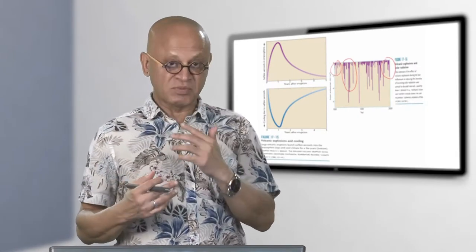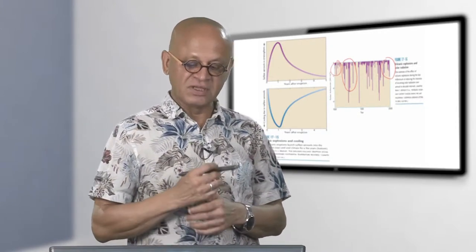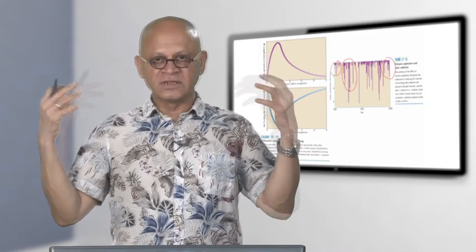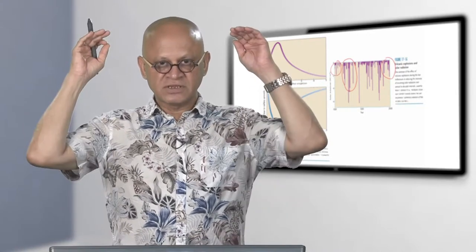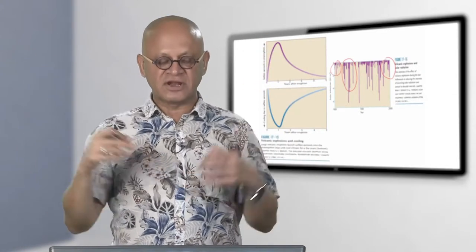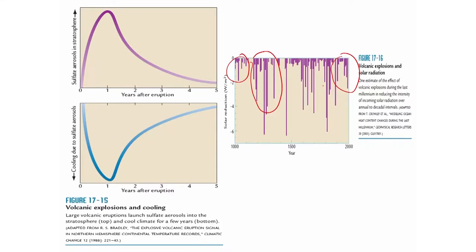We cannot predict future volcanic activity, so assumptions must be made in projections about radiation forcing. Volcanoes inject large amounts of aerosols, ash, dust, and sulfates into the stratosphere, where they remain for a long time because there is no weather or rain to remove them. The sulfate aerosol in the stratosphere is put in a burst during an eruption and then decays through dry deposition and other processes over subsequent years.